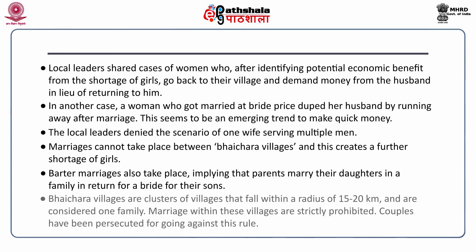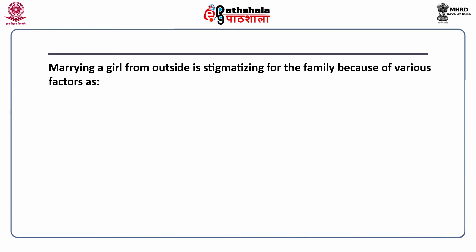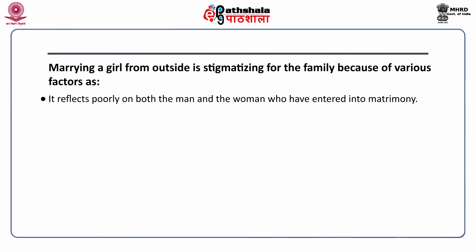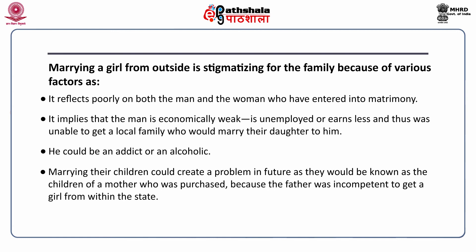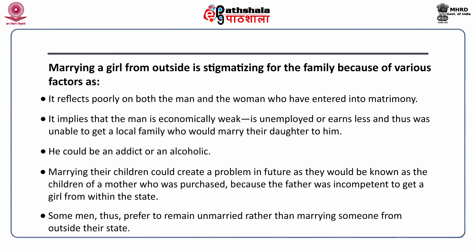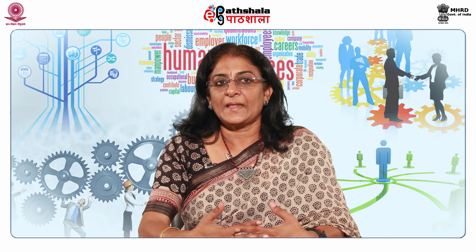Explaining the Bhai Chara villages: they are clusters of villages within a radius of 15 to 20 kilometers, considered one family. Marriage within these families is strictly prohibited, and couples have been prosecuted for going against this rule. Marrying a girl from outside is stigmatizing for the family, as it implies the man is economically weak, unemployed, earns less, or could be an addict or alcoholic. Children of such marriages face stigma as they are known as children of a mother who was purchased because the father was incompetent to get a girl from within the state. Some men thus prefer to remain unmarried rather than marry someone from outside their state.